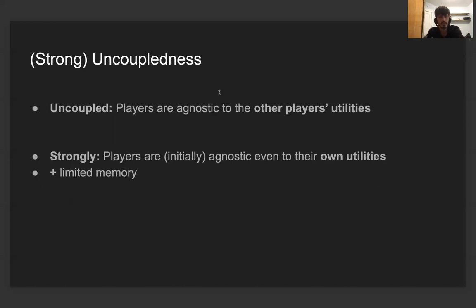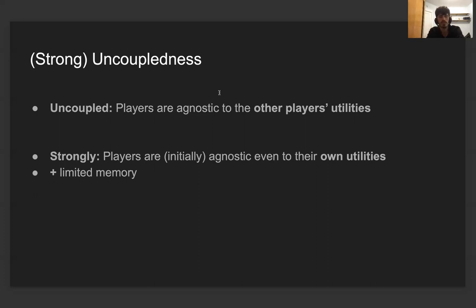This model satisfies certain important desiderata. First, the dynamics are uncoupled in the sense of Hart and Mas-Colell, which simply means that players, when they make decisions, are completely agnostic to the utilities observed by the other players. Furthermore, they are also strongly uncoupled, which simply means that players are initially agnostic even to their own utilities. This property of strong uncoupledness is crucial for games such as zero-sum, where if every player knows the payoff matrix, players could simply compute minimax equilibria locally and the problem would be trivial from a distributed standpoint.